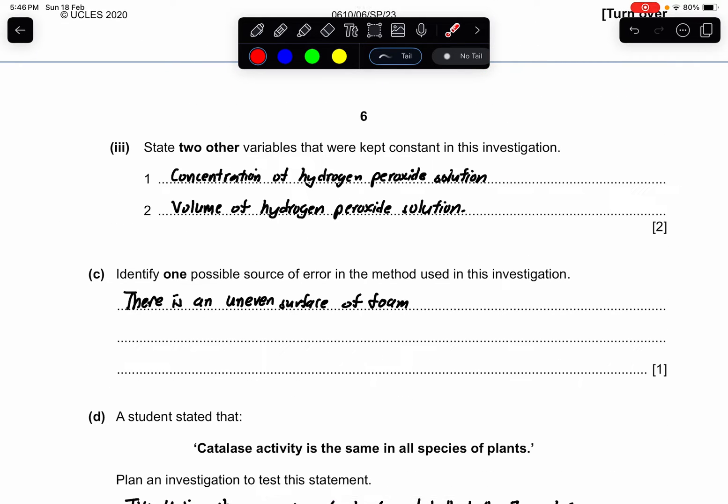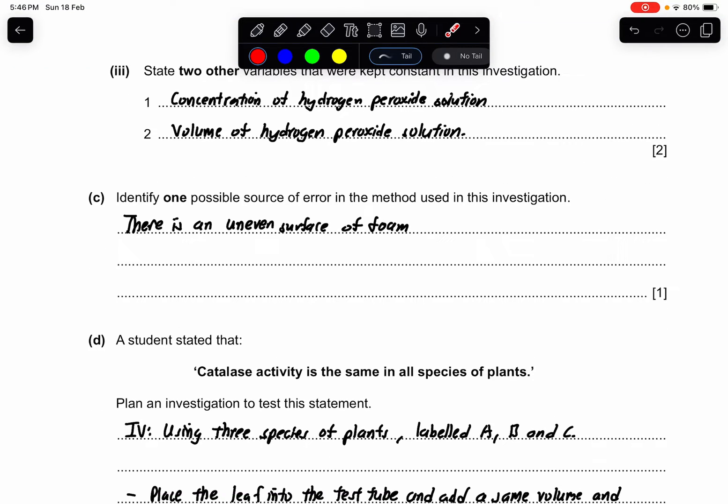Part 3: state two other variables that were kept constant in this investigation. Very simple, if the dependent variable is about measuring the foam and they definitely have added something in, that solution is always the key to your answer. So instead for this question is hydrogen peroxide solution. I talk about the concentration and the volume. This is a combo three mark. If you have concentration and volume, you get your two marks already.